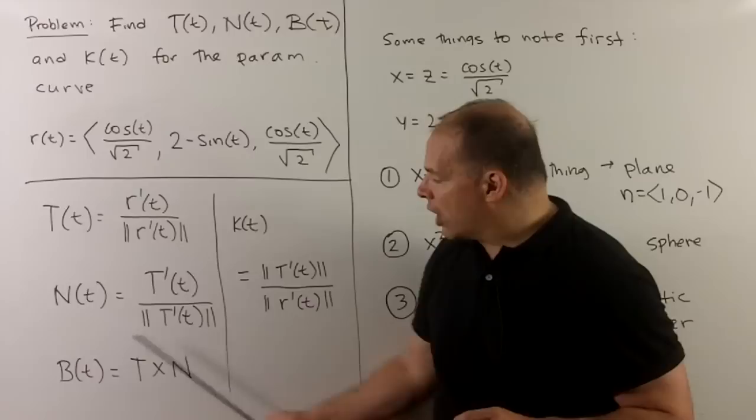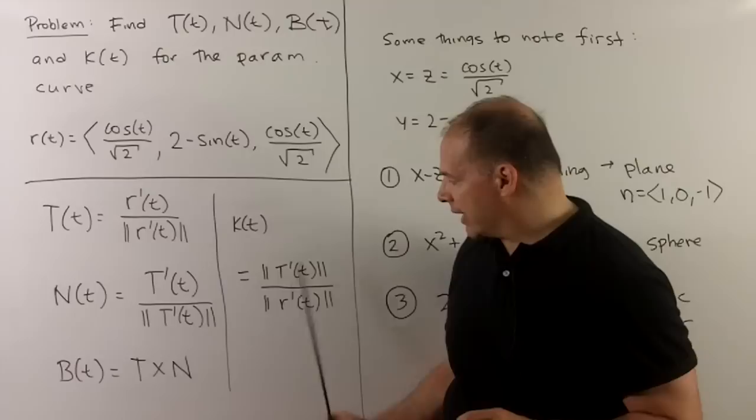The binormal, which is just T cross N, and the curvature, which is length of T'(t) over length of r'(t).